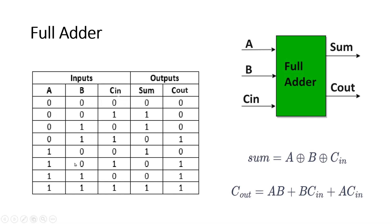Starting from zero-zero-zero to one-one-one, the purpose of the full adder is to add all three bits. Wherever you get a single one, sum will be one. Wherever there are two ones, sum will be zero and carry will be high. And wherever all three bits are one, sum will be high and carry will also be high. This is the expression of sum and carry.